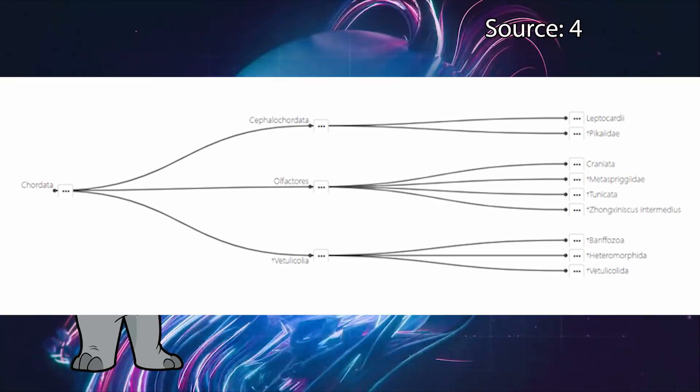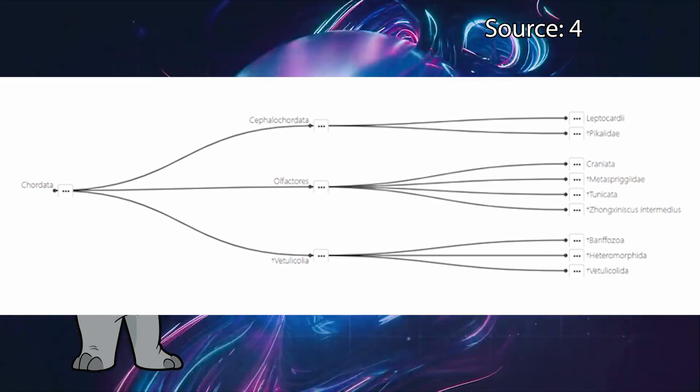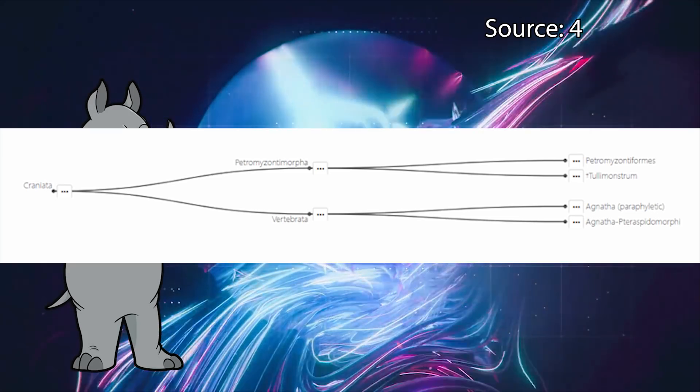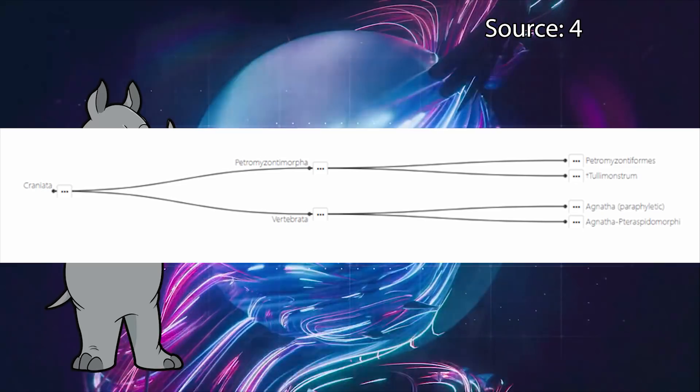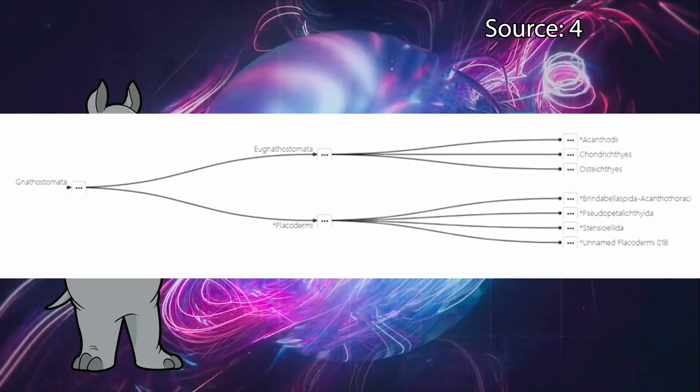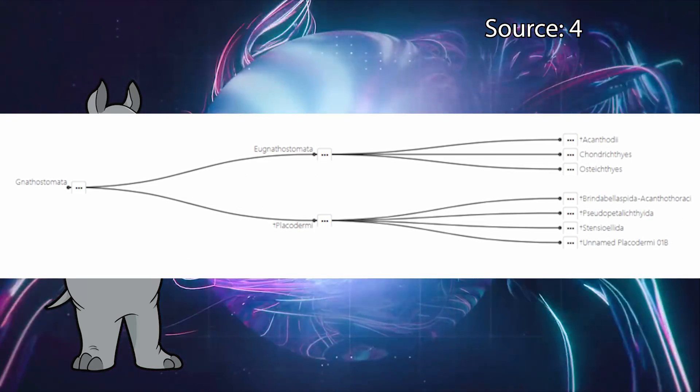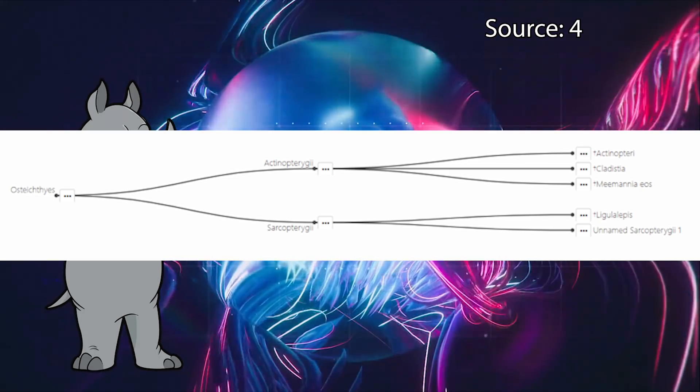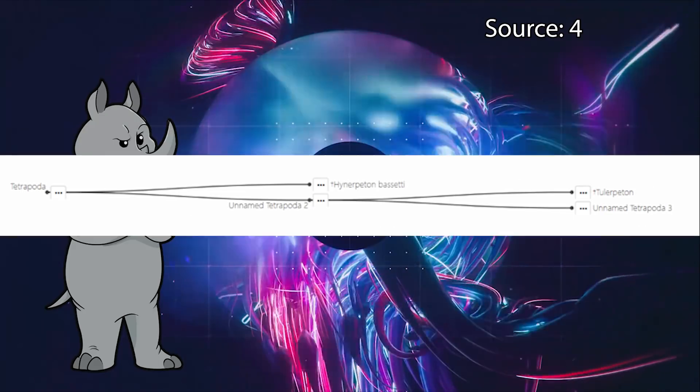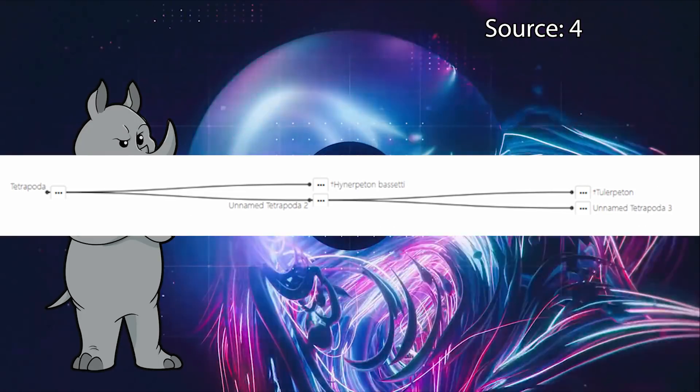Our embryos have notochords, so we are chordates. We have a sense of smell, so we are part of the olfactores. We have skulls, so are in craniata. We have spines, so are vertebrates. Skipping down past some of the more technical ones, we have jaws, and so are gnathostomes. We have bony rather than cartilaginous skeletons, so are osteichthyes. Skipping down past even more of the technical ones, we have four limbs, so are tetrapods.